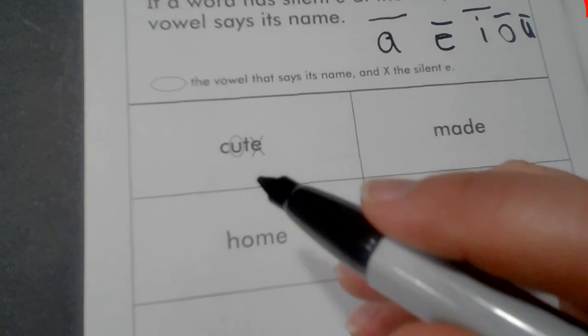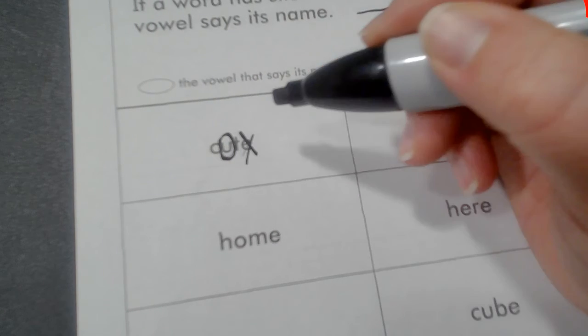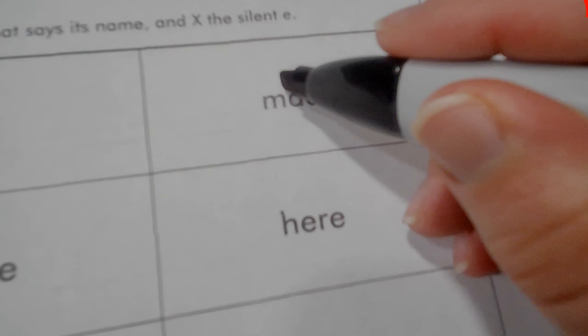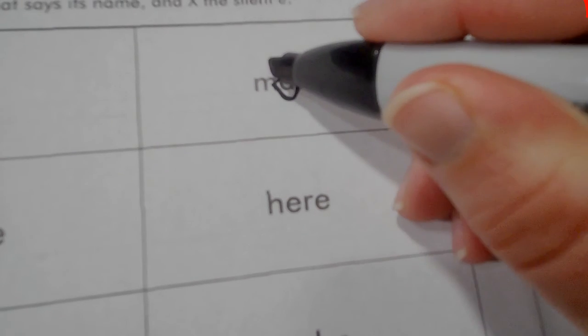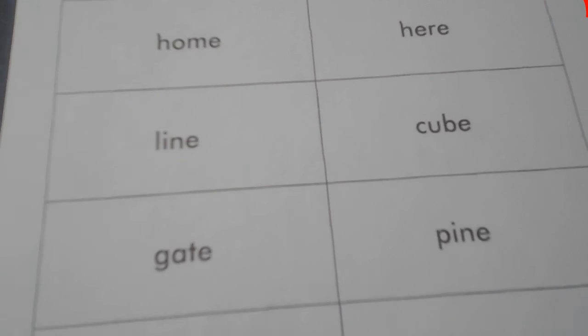So we have cute, U says its name, silent E. Made, A says its name, E is silent. Slash that E. Home, circle the vowel, slash the silent E. And keep reading it. Okay.